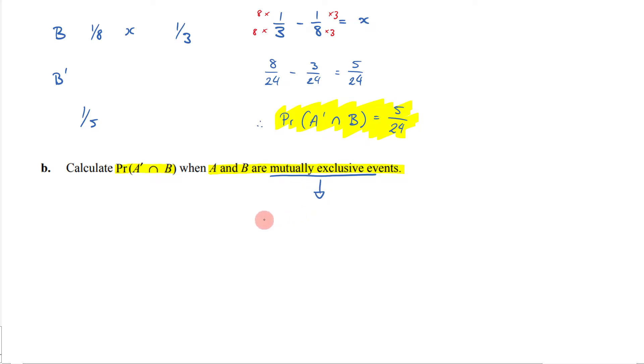Well, what this tells me is that the probability of A intersection B is equal to 0. Because if we think about mutually exclusive events, it means there is no overlap. That's A, that's B. There's no overlap between them.